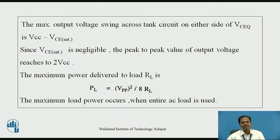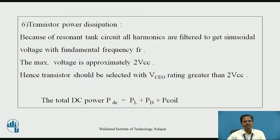Since the collector-to-emitter voltage under saturation condition Vc_sat is very small and negligible, the peak-to-peak value of the output voltage reaches 2·VCC. The maximum power delivered to load is PL = Vpp² / (8·RL). The maximum load power occurs when the entire AC load is used. Because of the resonant tank circuit, all harmonics are filtered to get a sinusoidal voltage at fundamental frequency FR, and the maximum voltage is approximately 2·VCC. Therefore, the transistor should be selected with a collector-to-emitter voltage VCO rating greater than 2·VCC. The total DC power in the Class C power amplifier equals load power PL plus power dissipated in the transistor plus power dissipated in the inductor coil.